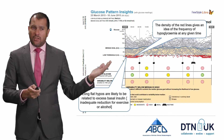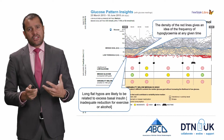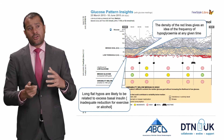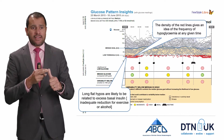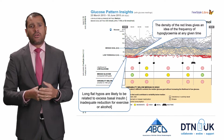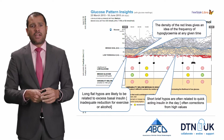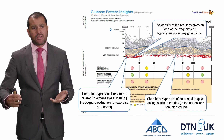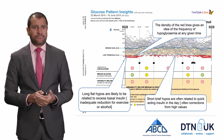These long flat hypos overnight are potentially related to too much background insulin, but could also be because the person is doing exercise or drinking alcohol on those nights. Short brief hypos in the day are often related to corrections or the end of boluses, and so more likely to be related to quick-acting insulin.